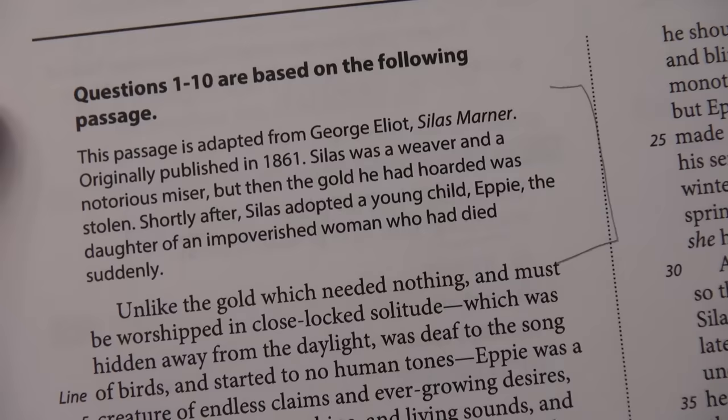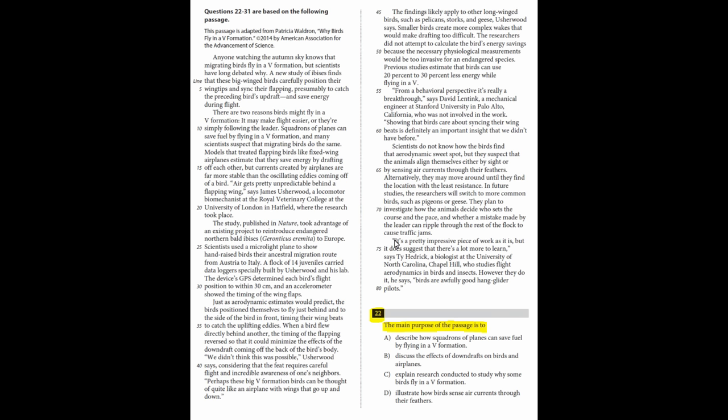This can be really important in providing context, and usually with the science passages or the two that debate each other, it could even occasionally help you answer some of the summary questions without even reading the passage. For example, this question asks, what's the purpose of this passage? Looking at the title, Why Birds Fly in a V Formation, that's like verbatim one of our answer choices, so it's very likely to be that one. Obviously, you still need to read it afterwards to confirm this, but it helps you get in the right framework of what you're supposed to be getting out of the passage. Otherwise, if you're like me, you'll end up reading the whole thing but not absorbing any of it.